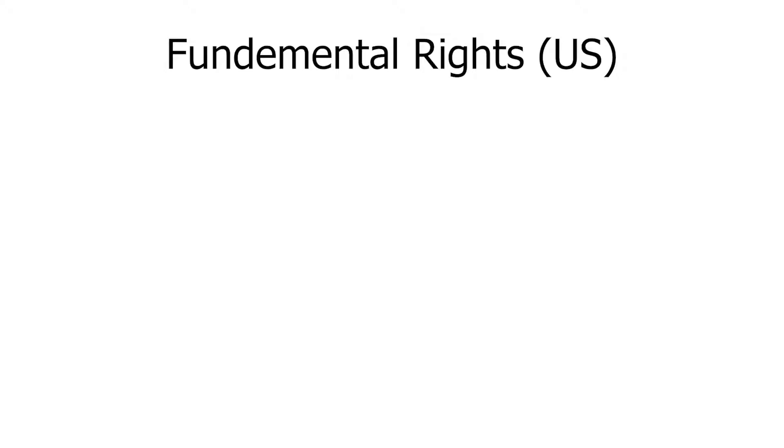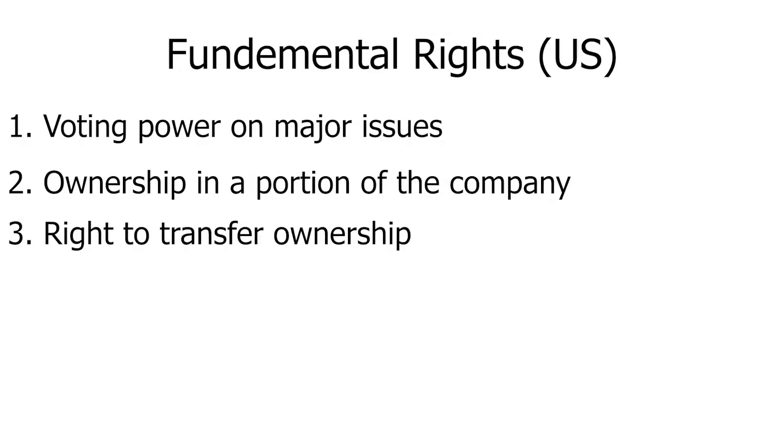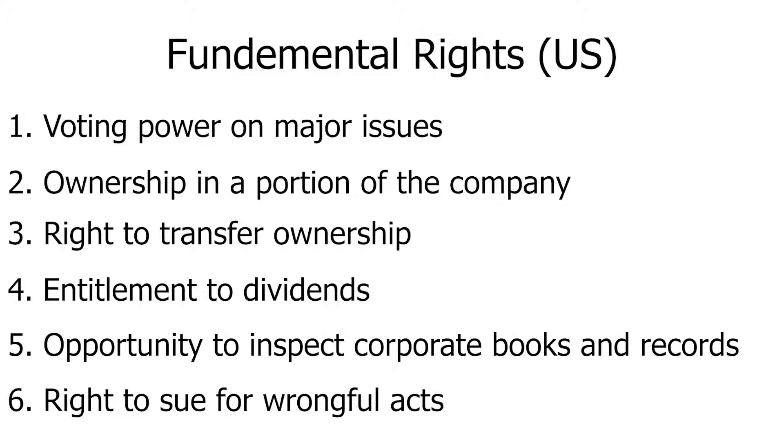In America, you have six fundamental rights, which are voting power on major issues, ownership in a portion of the company, right to transfer ownership, entitlement to dividends, opportunity to inspect corporate books and records, and the right to sue for wrongful acts. Now, in some cases, a company might decide to have different classes of shares which do carry different rights. The most common of which is to have a class of shares with limited or no voting rights. These are most common among newer tech companies, where the original owner has decided to limit voting rights in order to maintain the power to make the big decisions themselves. And if a company chooses to do so, they must declare it and make it known that this class of shares has a different set of rights.